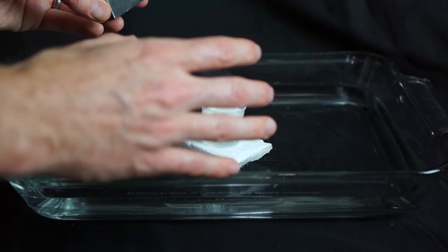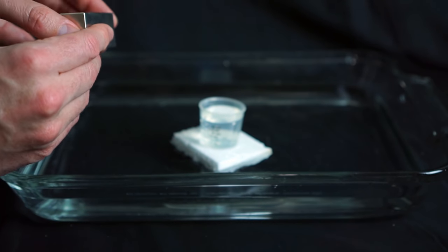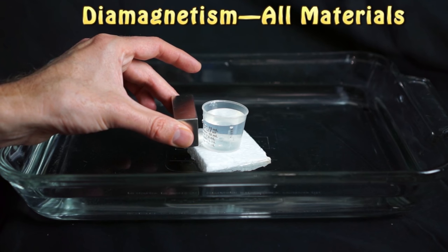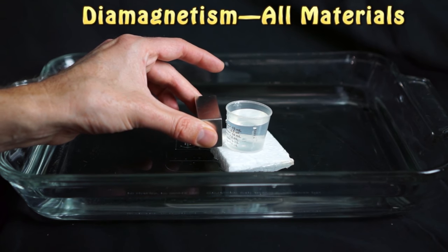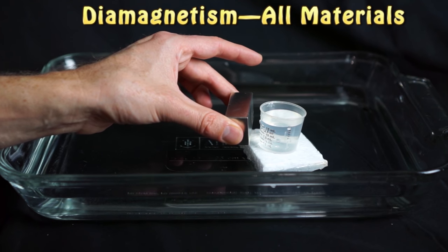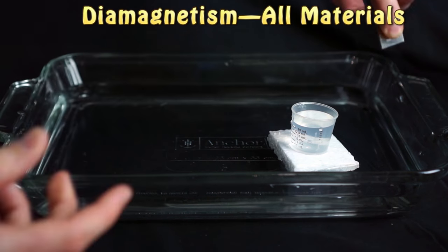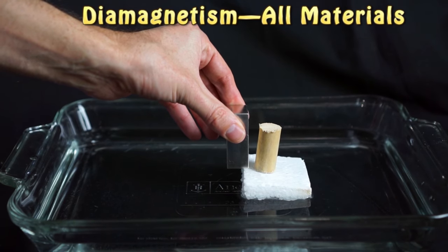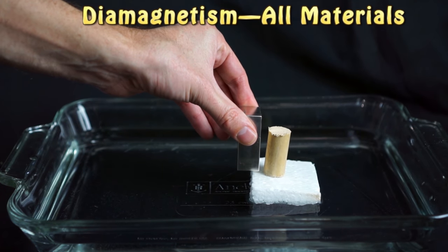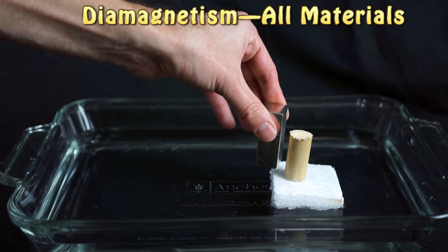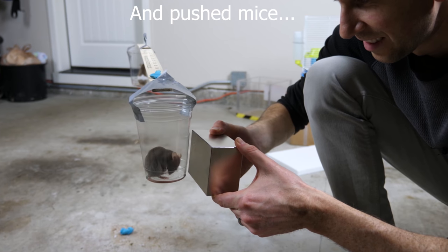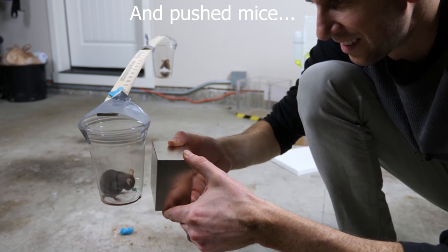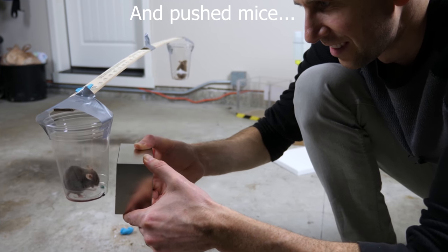So I just have my water cup floating in water so it doesn't have any friction. And I'm going to show you how when I bring my strong magnet near it, it will repel it. See how it's pushing it away? You can do the same thing with wood. There's actually scientists that have levitated frogs using diamagnetism. So notice I'm not touching him at all.